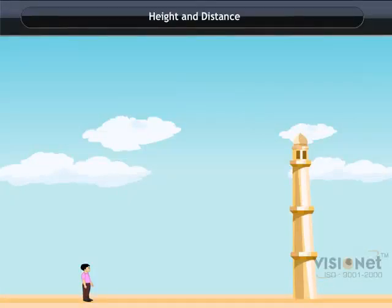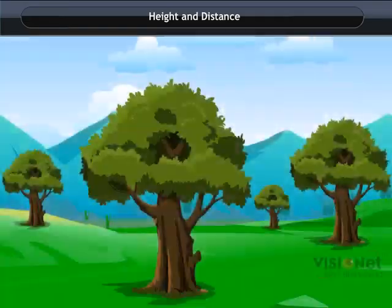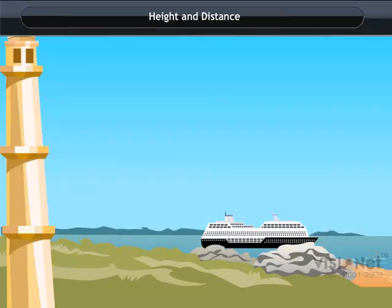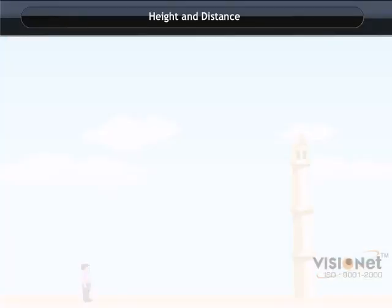Height and distance. Sometimes we are required to find the height of a tower, tree, building, and the distance of a ship from lighthouse or width of a river. We cannot measure them accurately, though we can find them using the knowledge of trigonometric ratio.